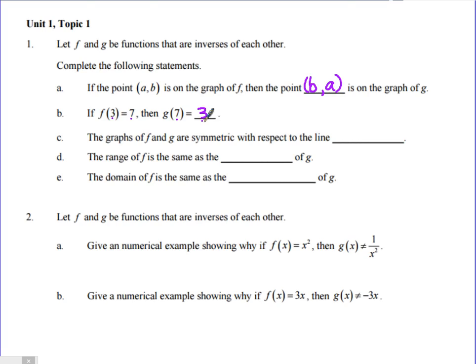The graph of f and g are symmetric with respect to that line. If we were drawing the graph, it would be that line right there. What is it called? y equals x. So the line y equals x. If we fold the graph, if we take one graph and reflect it over that line, it'll be the inverse function.